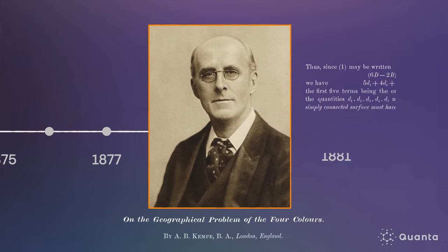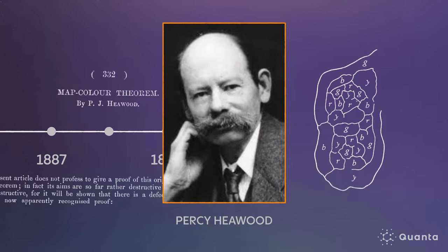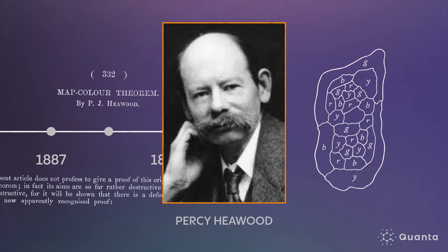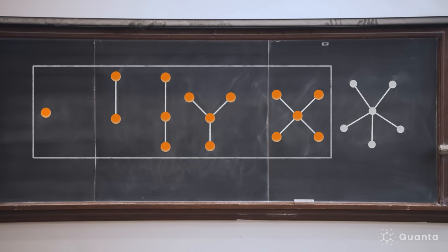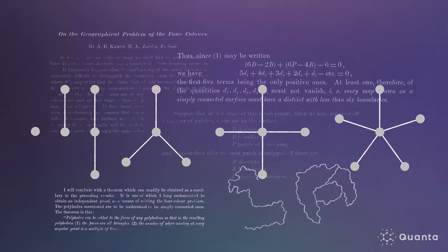Unfortunately, 11 years later, an error was discovered. Mathematician Percy Haywood found that Kemp's recoloring technique worked when the removed vertex had four or fewer neighbors, but not when it had five. When you read Haywood's writing, you could tell he feels bad for having discovered this flaw. So the theorem was a conjecture once again.